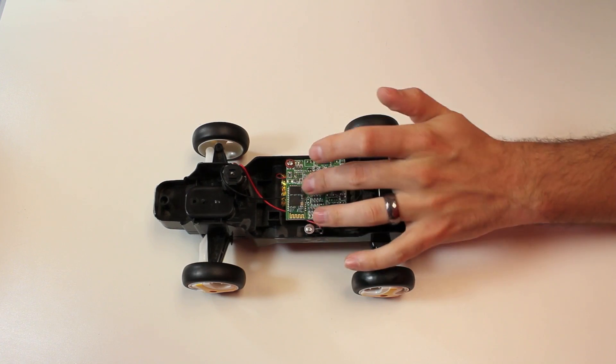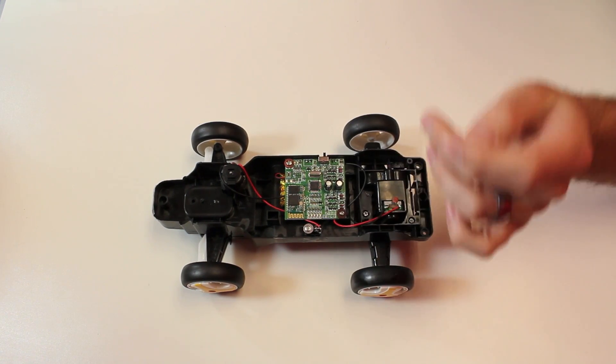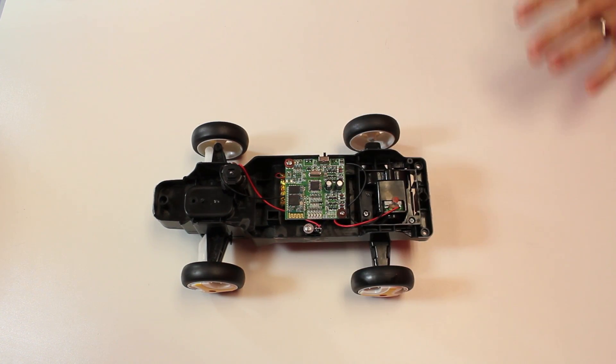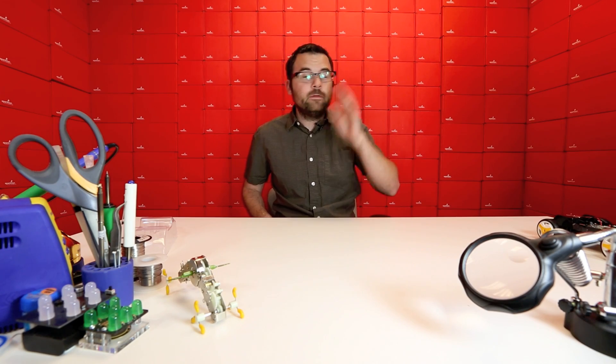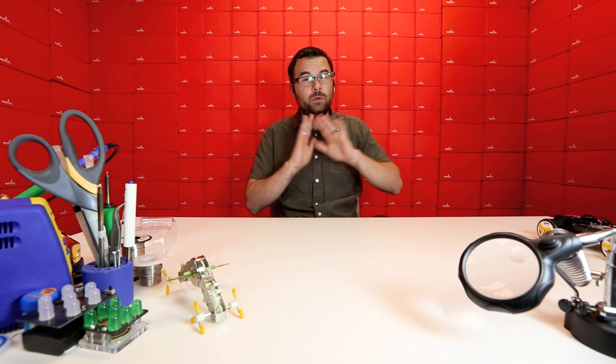This main board here that we've got has Bluetooth on it. It's got an ATmega 64, I think it is. We've got an ISP header, so you can reprogram that. And additionally, we have all the software, firmware, and everything like that on the website, so you can completely hack this, reprogram it, and do whatever you want.